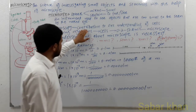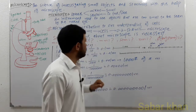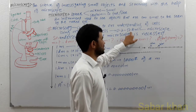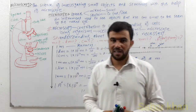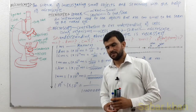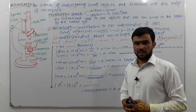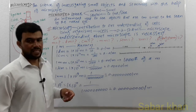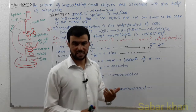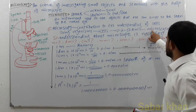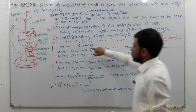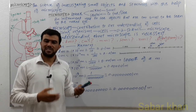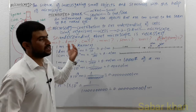Microscopy makes a contribution to our understanding of cells. Because living organisms are made up of cells, and cells range from 0.2 micrometers to 50 micrometers in size. Our eye's resolution power is 0.1 millimeter, so we can't see the cells. Since we can't see the cells, how will we know about them? We need an instrument — the microscope — to see and understand the cells.